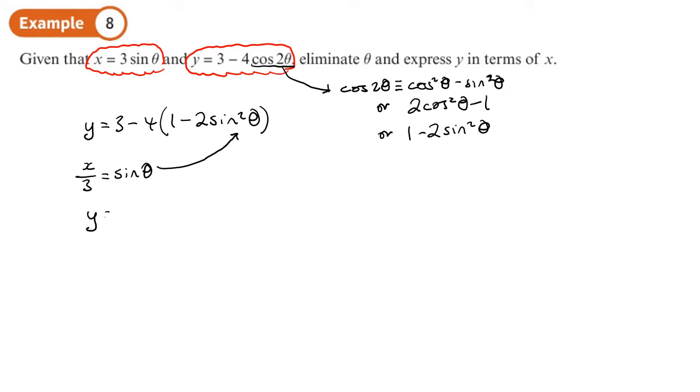So y equals 3 minus 4 times 1 minus 2 times x over 3 squared. Yeah, so you can see the substitution. I can leave it like that if I want to. It doesn't say simplify. It just says express y in terms of x. I've done that.